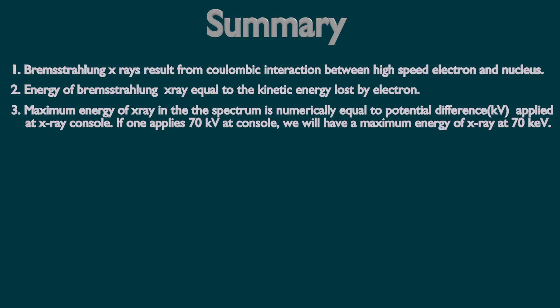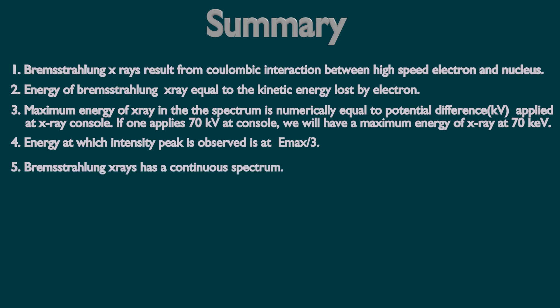If one applies 70 kV at console, we will have a maximum possible energy of X-ray at 70 keV. Energy at which intensity peak is observed is maximum energy divided by 3. Bremsstrahlung X-rays have a continuous spectrum.